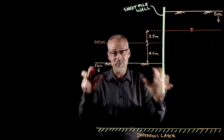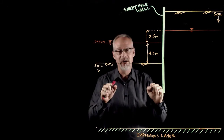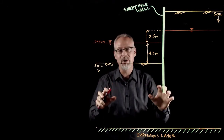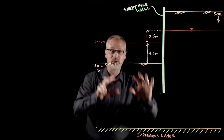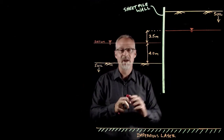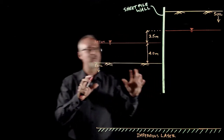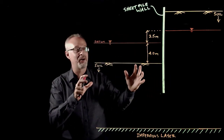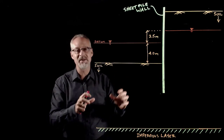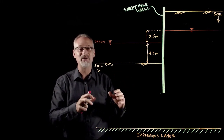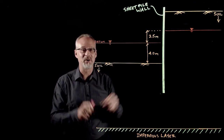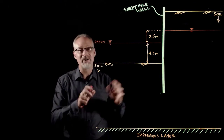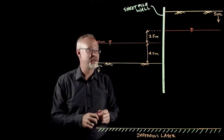The first step in doing a proper flow net analysis is to draw the problem to scale. My drawing here on the lightboard is not perfectly to scale but it's not bad. You can probably do a better job on a sheet of paper with a scale or ruler, but in concept this should do the trick.